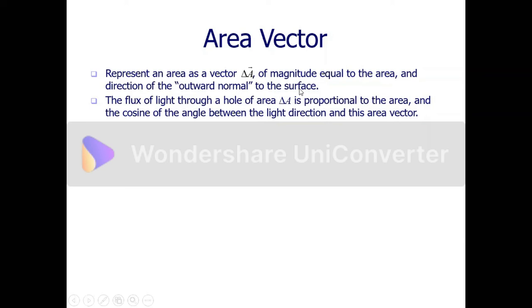The magnitude of the area vector is just equal to the area available for the vector field to pass through. And then, what about the direction? The direction is the outward normal to the surface. So let us look at this in closer detail.